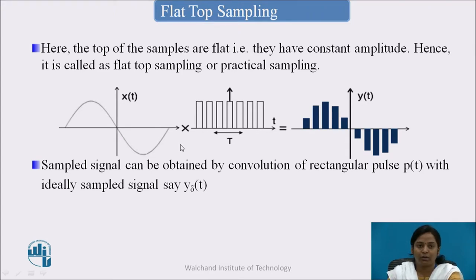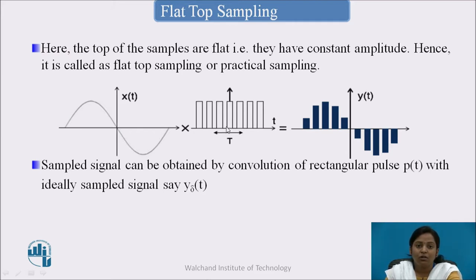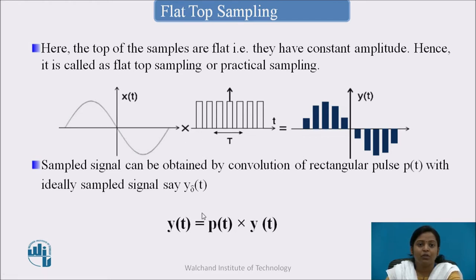Next is flat-top sampling. Here, the top of the samples are flat — they have a constant amplitude — hence it is called flat-top sampling. The sampling function is also a train of unit pulses. The amplitude of this train of pulses changes with respect to the continuous time signal, but the top of each sample is flat. A sample-and-hold circuit is used here. The sampled signal y(t) = p(t) · y_δ(t), where p(t) represents the train of pulses and y_δ(t) is the ideally sampled signal.